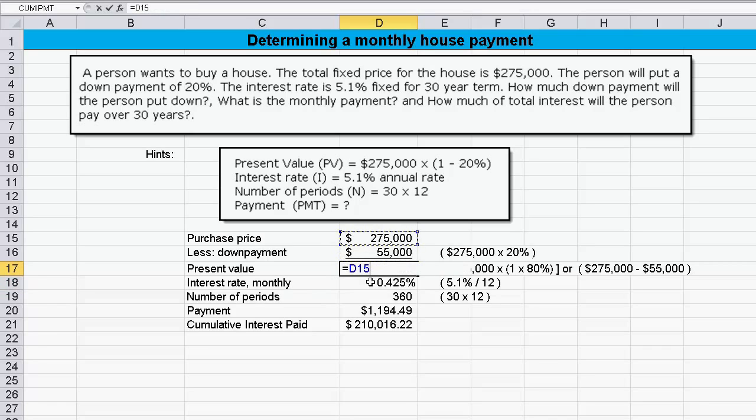Of course, you could calculate that directly by taking $275,000 times 1 minus 20%. That's probably easier in Excel just to subtract one from the other. But you see, they both get you the same answer.